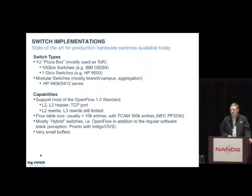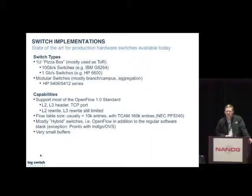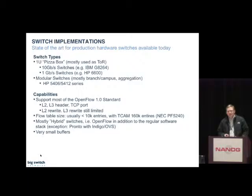The most common OpenFlow switch is a pizza-box top-of-rack type design. It comes in 10-gig or 1-gig flavors — high-density 10-gig with 48 or 64 ports, or many ports of 1-gig. There's also a modular small chassis switch available from HP, the 5406. These switches typically implement most of OpenFlow 1.0: they can match on Layer 2, Layer 3 headers, and TCP port, with basic rewriting capabilities. They typically all support L2; L3 support is limited — specifically, there's no mechanism for TTL decrement yet, which limits routing usefulness. Flow table size is typically less than 10k entries, with the NEC switch being an exception at up to about 160,000 entries due to an external TCAM.